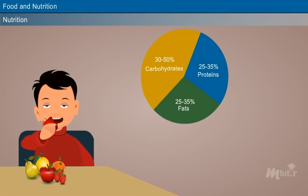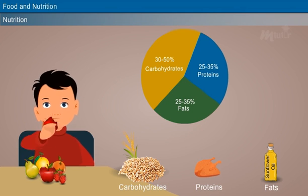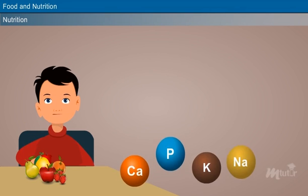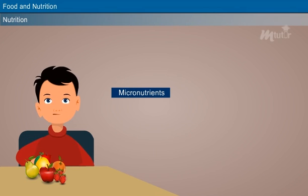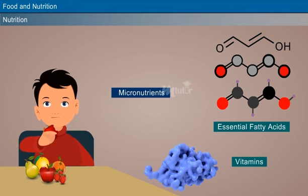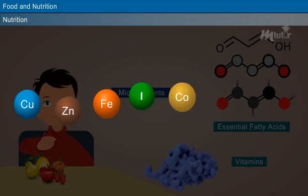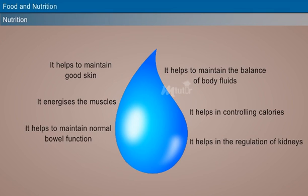Macronutrients are required in high proportions by the body. They include carbohydrates, proteins, fat, and mineral elements such as calcium, phosphorus, potassium, sodium, and magnesium. Micronutrients are required in smaller amounts by the body. They include essential fatty acids, vitamins, and trace elements such as copper, zinc, iron, iodine, cobalt, selenium, and chromium.